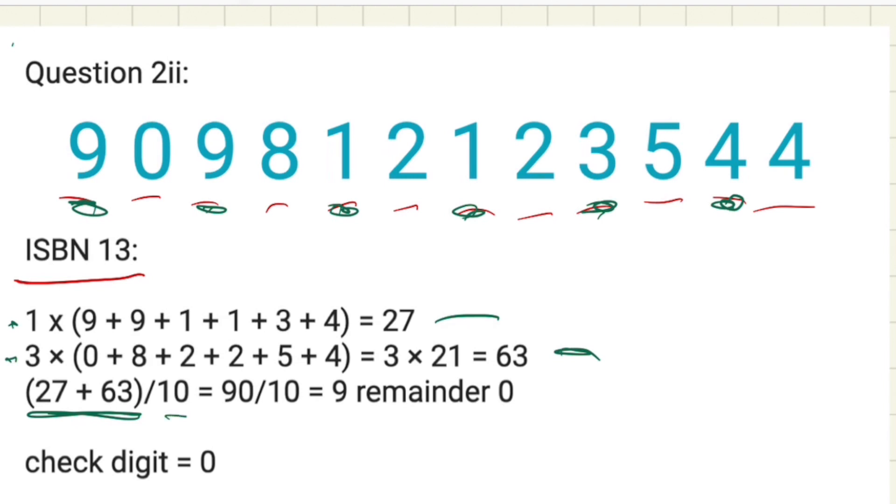So we add these two numbers together, 27 plus 63, and we divide it by 10. So we have 90 divided by 10, which is basically 9, remainder 0. There's no remainder on this, but we still put the check digit as being 0.